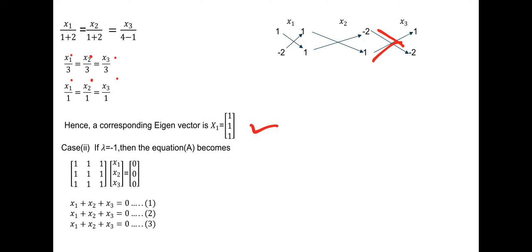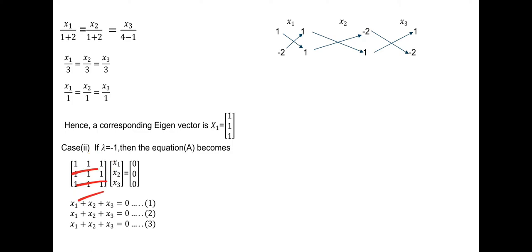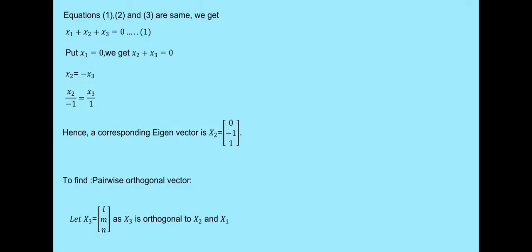For lambda equals 1: subtracting 1 from each diagonal element gives all elements equal. So all three equations reduce to the same single equation: x1 plus x2 plus x3 equals 0. Since we have only one independent equation for two unknowns, we need to find two independent eigenvectors. Setting x3 equal to 1, we get x2 equals minus 1 and x1 equals minus 1.